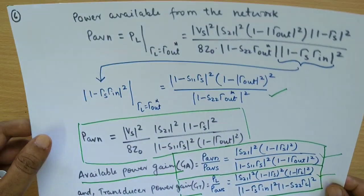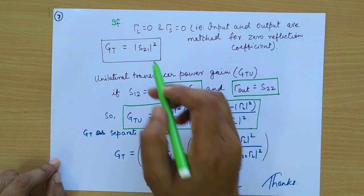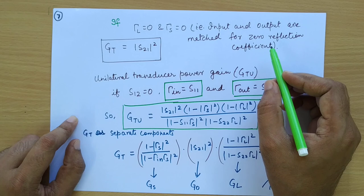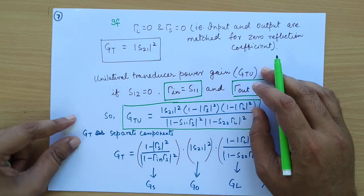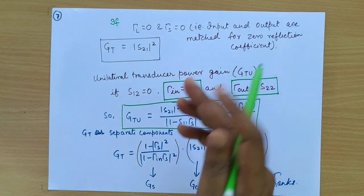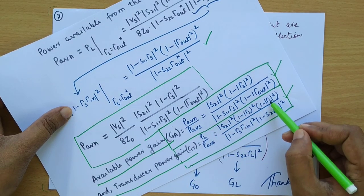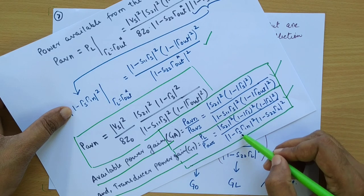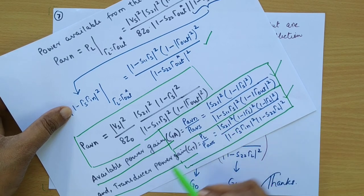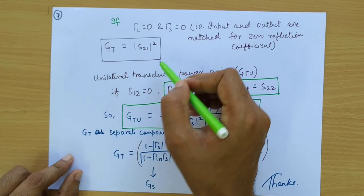There are some special cases to discuss. When gamma_L equals 0 and gamma_S equals 0, both input and output are matched for zero reflection coefficient. Substituting gamma_L equals 0 and gamma_S equals 0 into the transducer power gain equation makes every factor become 1 except |S21|². So the transducer power gain reduces to just |S21|².